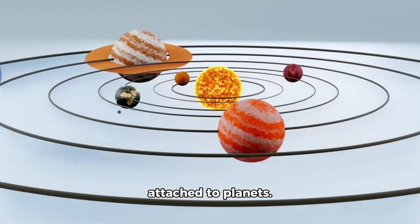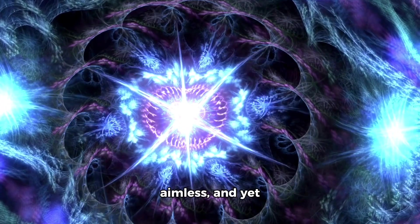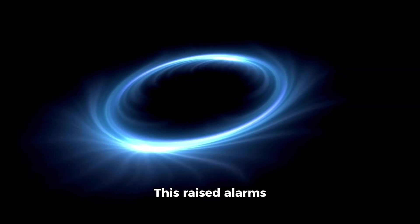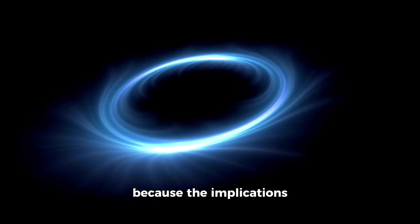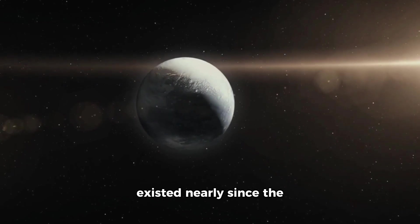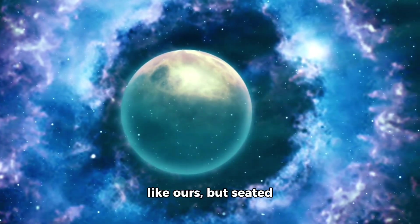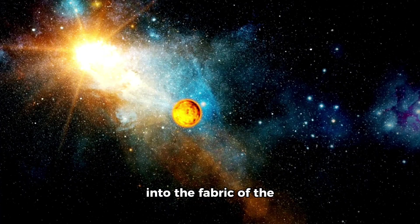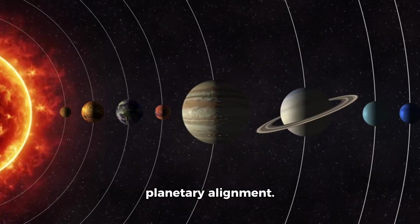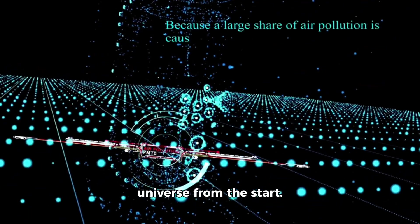These chemicals weren't attached to planets. They weren't swirling inside stars. They were drifting, aimless, and yet somehow intact after 13 billion years. This raised alarms because the implications were beyond biological. It meant that the ingredients of life had existed nearly since the beginning, not formed later in solar systems like ours, but seeded into the fabric of the cosmos almost immediately. And if that's true, then life isn't a fluke of planetary alignment. It's a feature, a constant, a thread woven through the universe from the start.